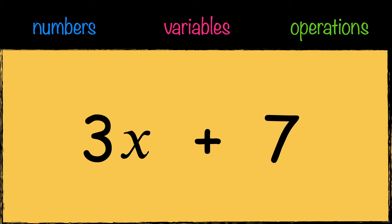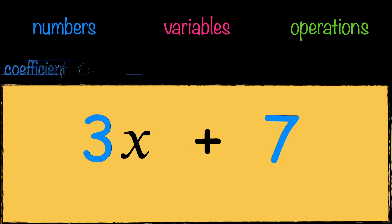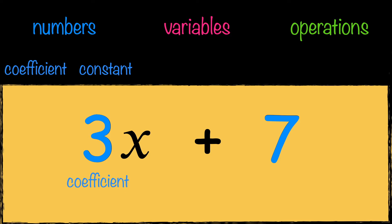and constant. In this expression the number three is the coefficient of X — it indicates how many times X is going to be multiplied. The number seven however is a constant, meaning it's a fixed amount added to three times X, and it stays